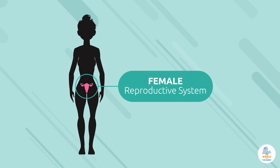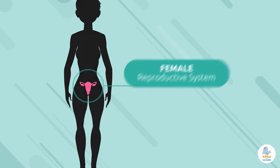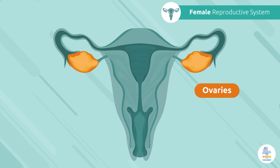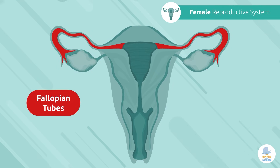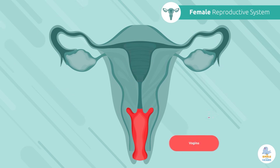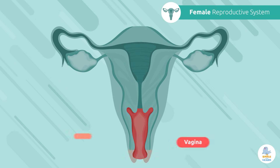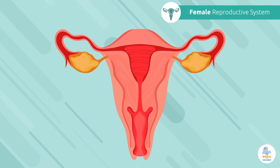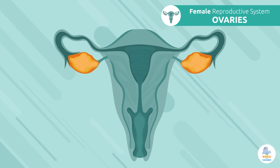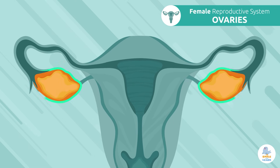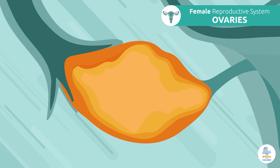Let's start with the female reproductive system. The main components of the female reproductive system are the ovaries, fallopian tubes, uterus, vagina, and vulva. Let's take a closer look. The ovaries are small, almond-shaped organs responsible for producing the female sex cells, called eggs.